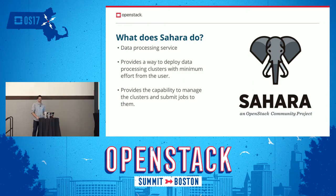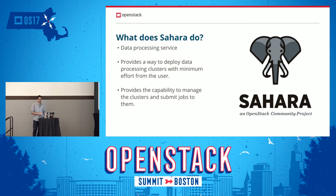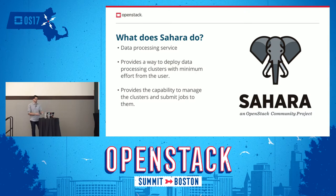Sahara is the data processing service in OpenStack. What it does is it provides a way for users to deploy clusters of data processing engines with minimum effort from the user. So Sahara allows the user to create Hadoop clusters, Spark clusters and Storm clusters at this point, and have different vendors of Hadoop, like Cloudera, MapR, Ambari, and have Storm and Spark. Another important part of Sahara is that it provides a way for users to deploy jobs into these data processing clusters, so the user won't have to log in into that machine to run the job. It can do it from Horizon, the OpenStack interface.